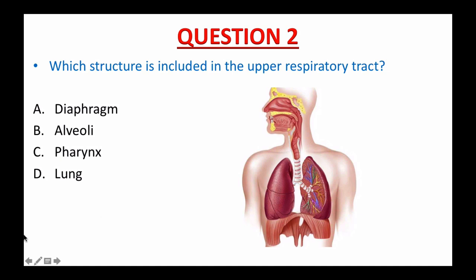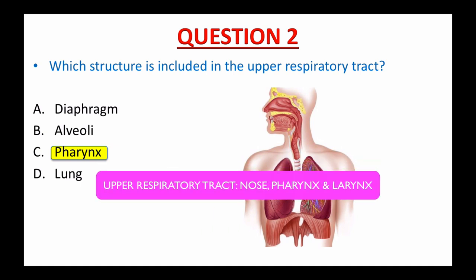Question number two: Which structure is included in the upper respiratory tract? A. Diaphragm. B. Alveoli. C. Pharynx. Or D. Lung. If you picked C — pharynx — that's it, perfect. The upper respiratory tract contains the nose, pharynx, and larynx.